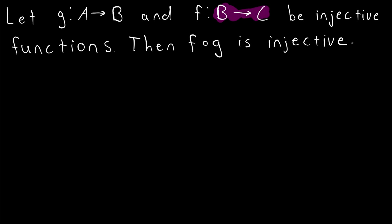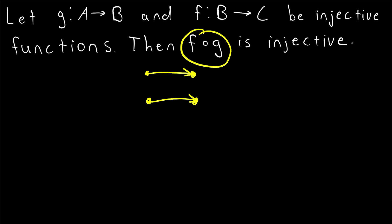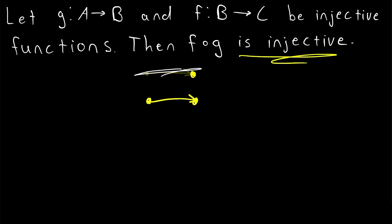So these are both injective functions, or one-to-one functions, meaning they map distinct elements to distinct elements. Then their composition, F of G, is injective, and we'll be proving that in today's Wrath of Math lesson.